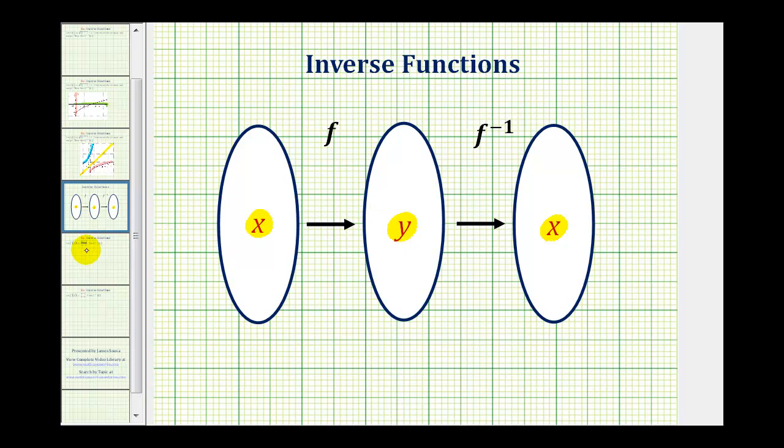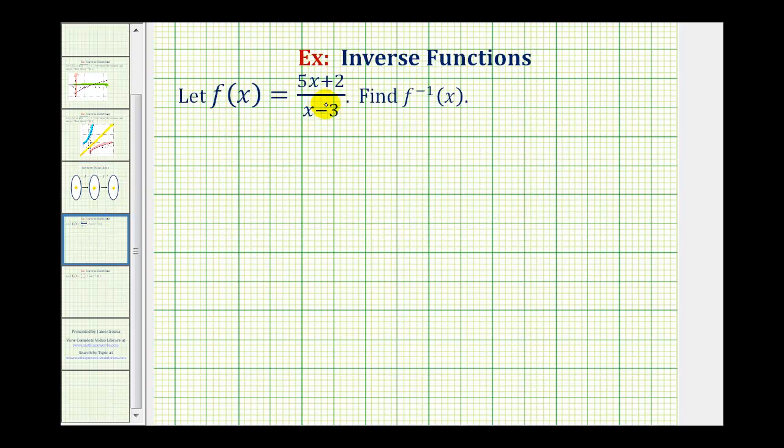Which means when we're given the equation of the function, we want to find the inverse. The first step is to write the original function in terms of x and y, and then we'll interchange the x and y variables. So the original function can be written as y equals the quantity five x plus two divided by the quantity x minus three.